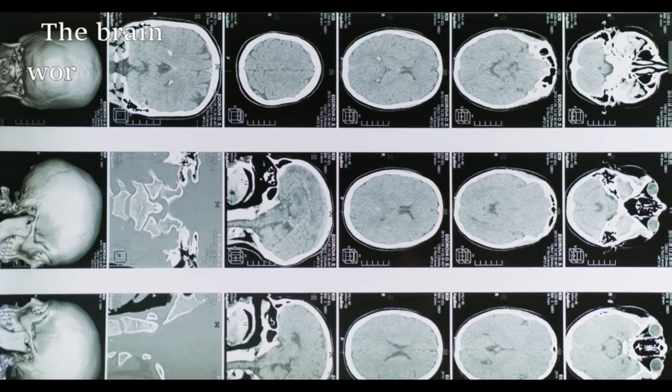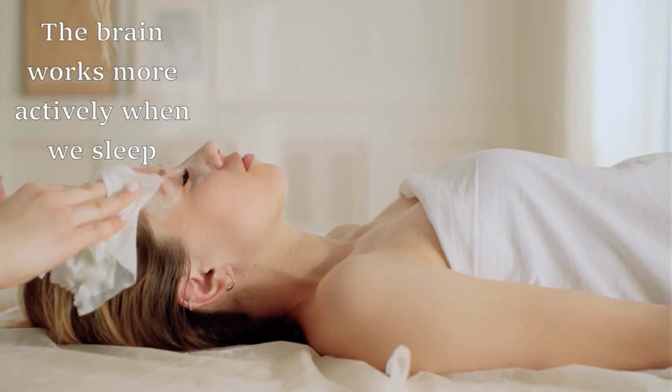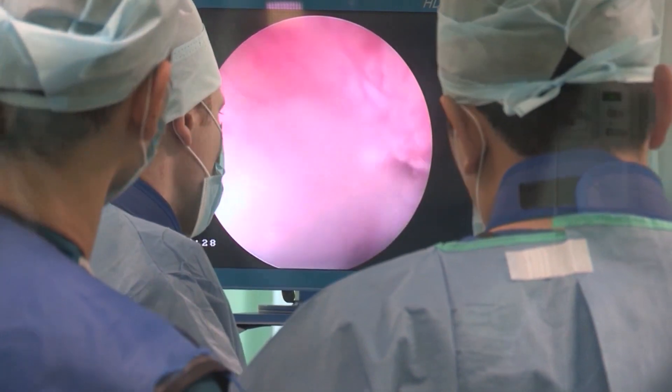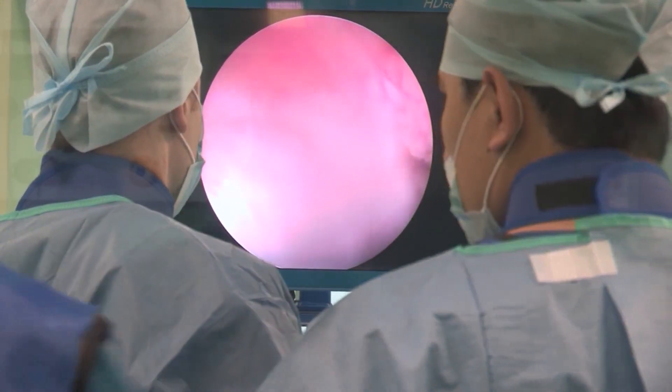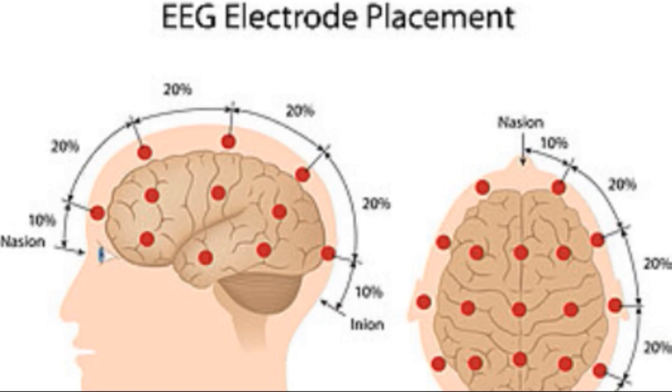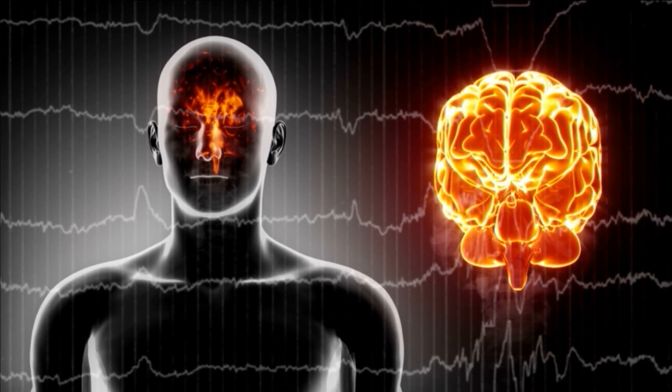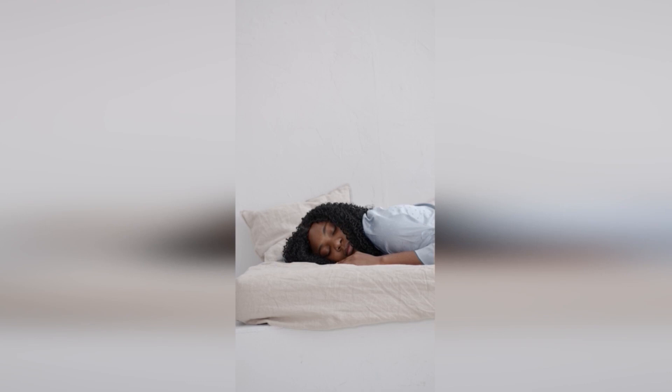2. The brain works more actively when we sleep. As it works, the brain creates electrical fields that can be measured on the surface of the scalp using electroencephalography. It seems to us that during sleep the brain is turned off, but in fact, it works even more actively than during the day.